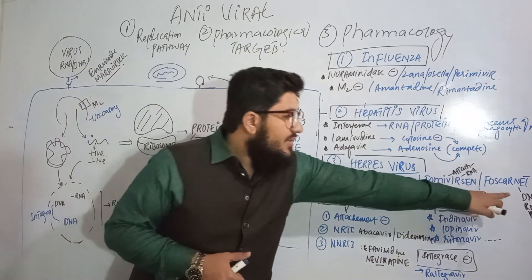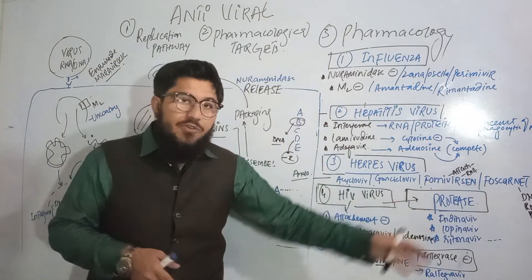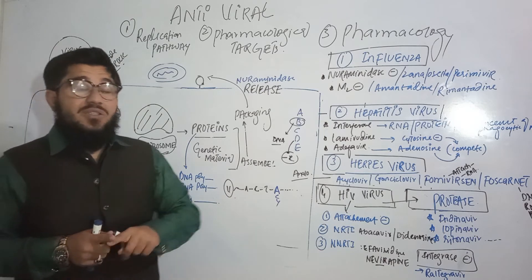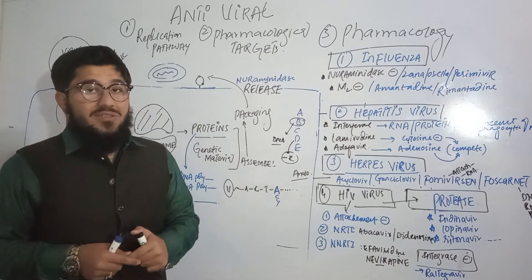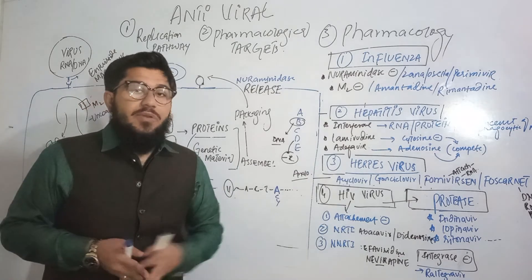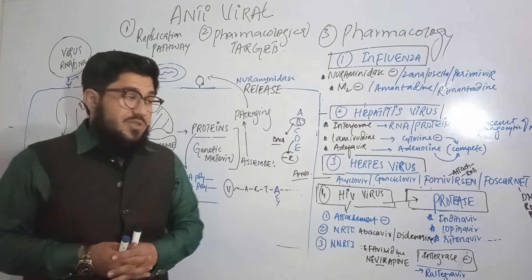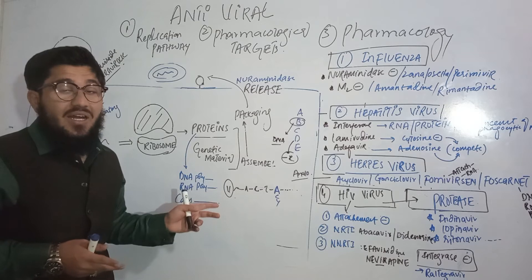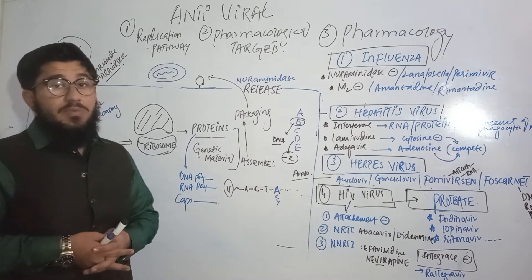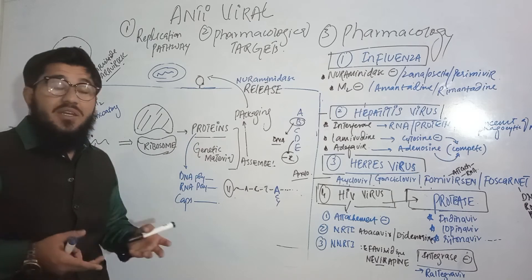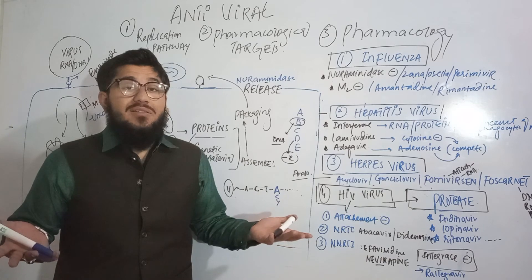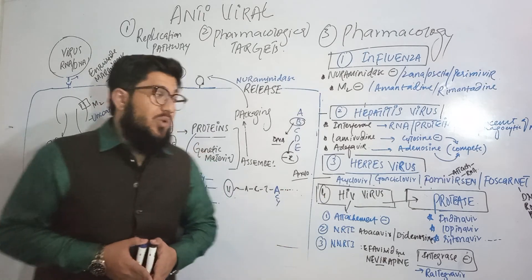The last drug is foscarnet, which has an interesting job: it inhibits both DNA polymerase and RNA polymerase. We know DNA polymerase synthesizes DNA and RNA polymerase synthesizes RNA. If both are inhibited, there is no synthesis of viral DNA or RNA. Since the virus needs both DNA and RNA for its existence, inhibiting both polymerases means there is no virus left.